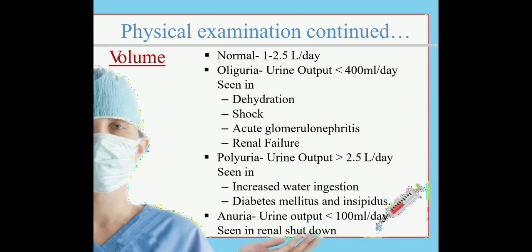The normal volume of urine is 1 to 2.5 liters per day. In oliguria, urine output is less than 400 ml per day, commonly seen in dehydration, shock, acute glomerulonephritis, and renal failure. Polyuria means more than normal — urine output is more than 2.5 liters per day, seen in increased water ingestion or diabetes mellitus and insipidus. Anuria is when urine output is less than 100 ml per day, seen in renal shutdown or renal failure.